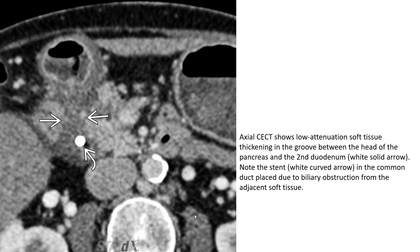Axial contrast-enhanced CT shows low-attenuation soft tissue thickening in the groove between the head of the pancreas and the second duodenum — wide solid arrow. Note the dilated — wide curved arrow — common bile duct due to biliary obstruction from the adjacent soft tissue.